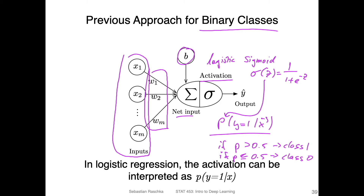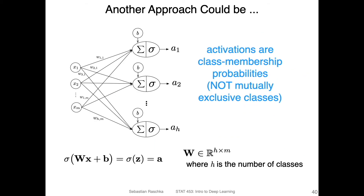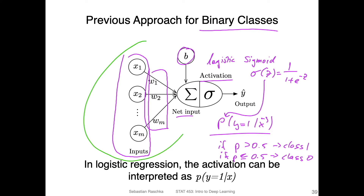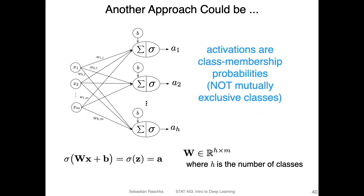So how can we generalize this to multiple classes? We can extend this model. Here's a drawing of a model that would work with a multi-class classification dataset where we have more than two classes. The original logistic regression model can be thought of as embedded in this bigger model — same inputs, the same feature vector of dimensionality M. We can think of the green portion as the same model as before. So this would be one logistic regression model.